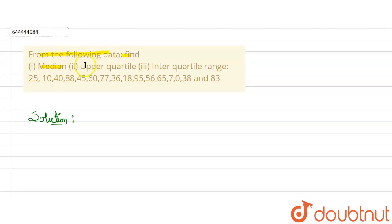Find median, upper quartile, and interquartile range. The data given here is: 25, 10, 40, 88, 45, 60, 77, 36, 18, 95, 56, 65, 7, 0, 38, and 83. So we know the first and basic step is to arrange them in ascending order.